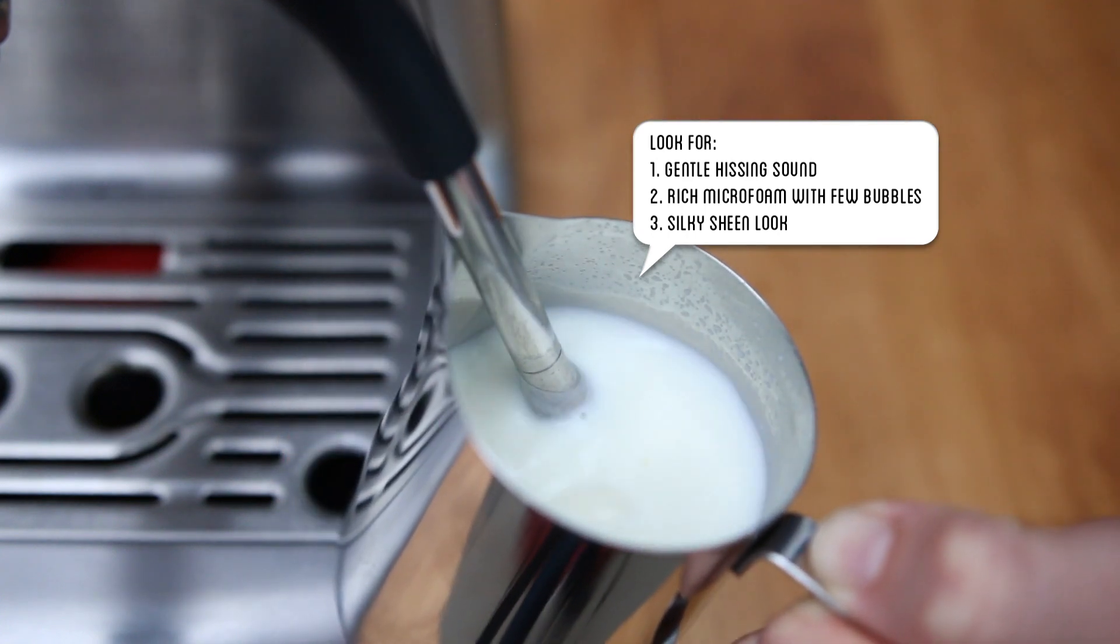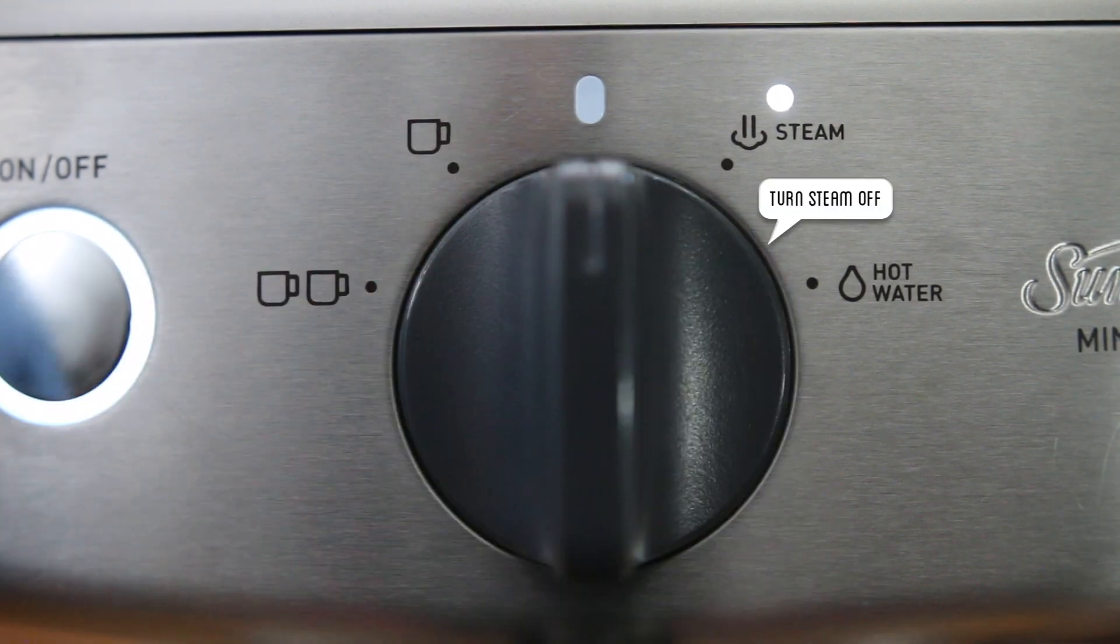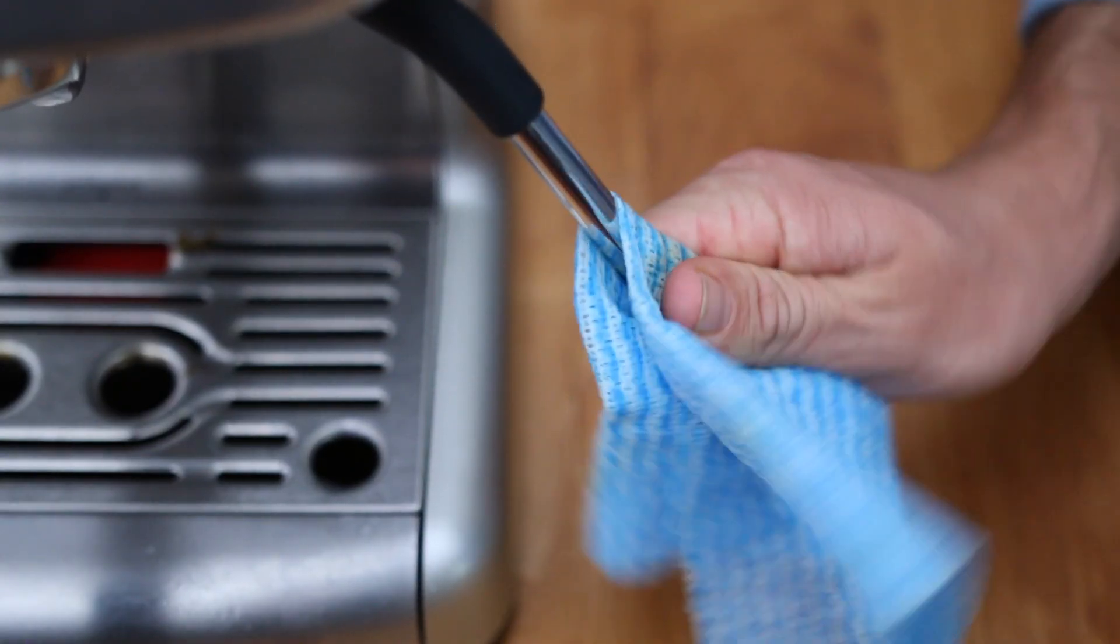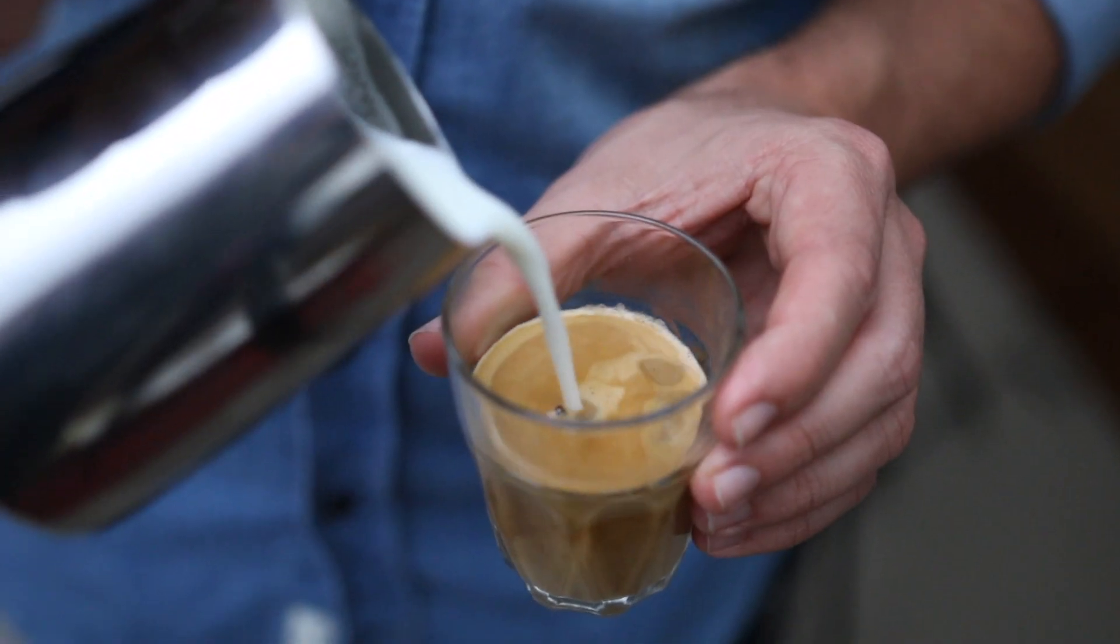When it's just too hot to touch continuously for 3 seconds, turn the steam off and then with a wet cloth purge and wipe down the steam wand. Give your milk a few taps and swirls and then gently pour into your coffee.